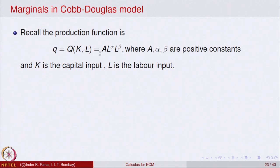Let us recall that the production function in the Cobb-Douglas model is given by Q, which is a function of two variables K and L, where K is the capital input and L is the labour input. It is given by A into L raised to power alpha and K raised to power beta, where A, alpha, and beta are positive constants.